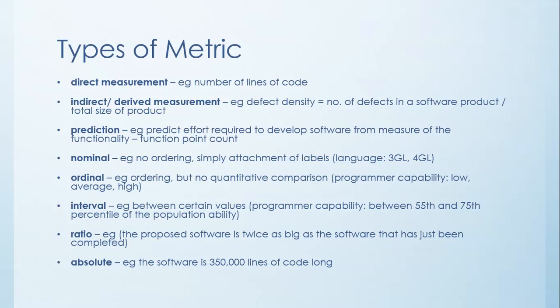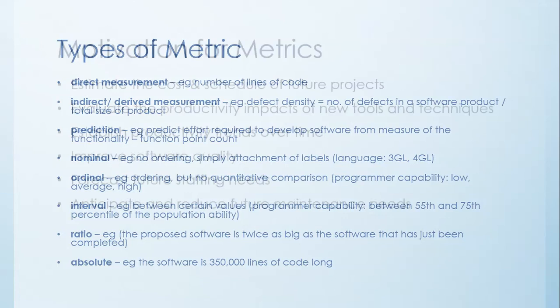The last type of metric is absolute metrics. So the software is 350,000 lines of code long. So you could have direct measurements that are absolute. You could have indirect measurements that are absolute. You could have a little bit of mix and match between these different types. But in general it falls into one of these categories.